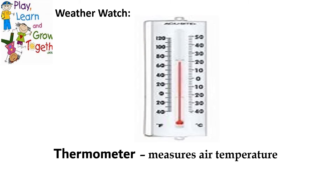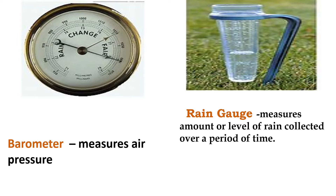If the weather is hot, the reading of the thermometer will rise up; if it is cold, the reading is low. We have the barometer, which measures air pressure, and the rain gauge, which measures the amount or level of rain collected over a period of time. If the rain drops heavily, you can collect a lot of rain in that particular period.